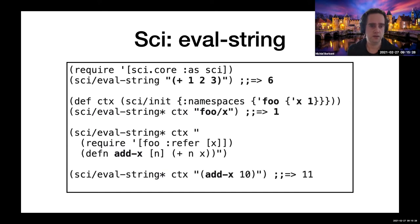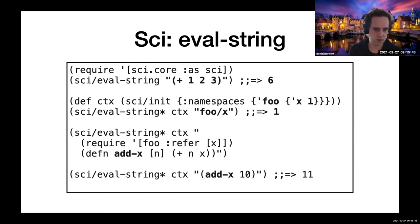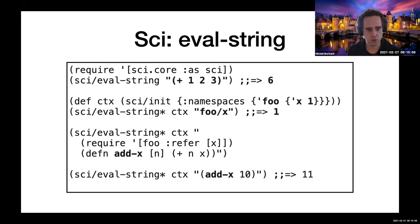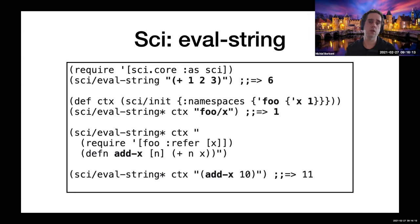If you want to remember state, you first create a context using 'sci/init', and give it a configuration — for example, a namespace 'foo' with a value 'x' in it. Then you call 'eval-string*' with a context and a string. You say 'foo/x' and it returns one. You can reuse this context object to evaluate more things — define a function, and it remembers this function inside the context. This is the only place where state is stored; we do not affect any global environment.